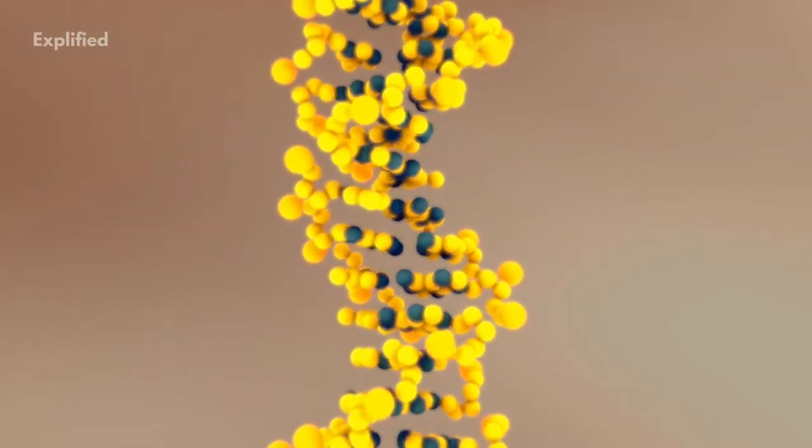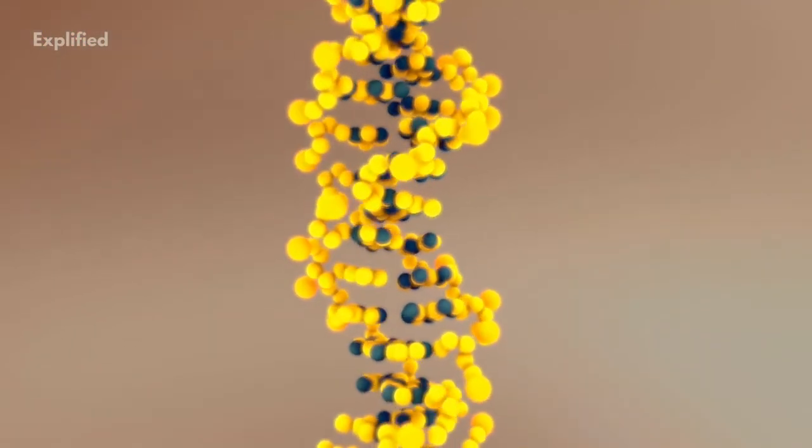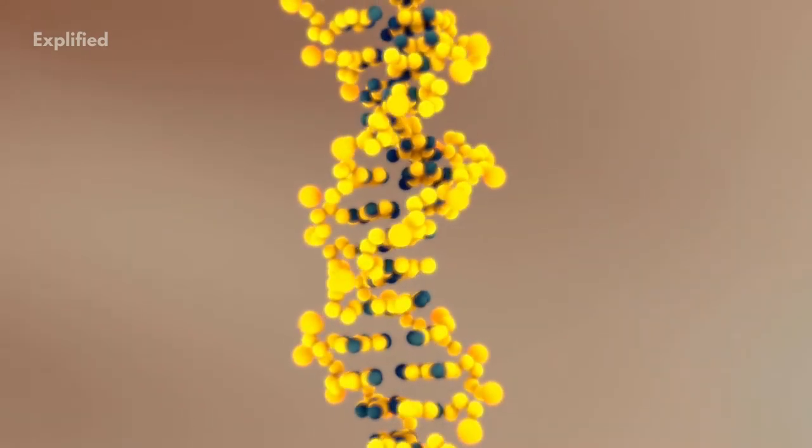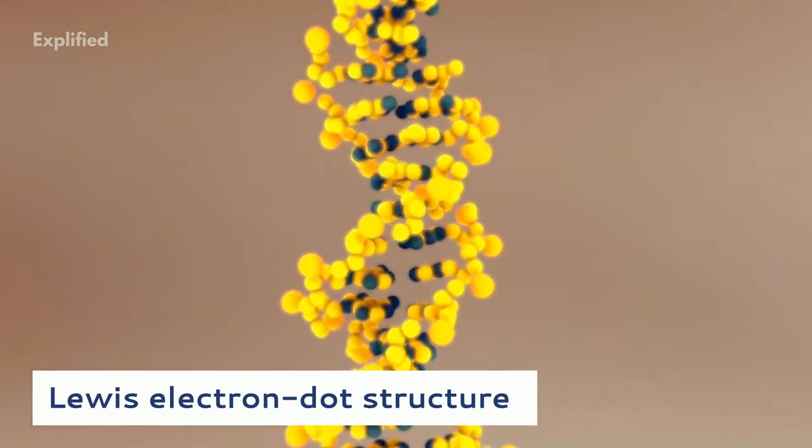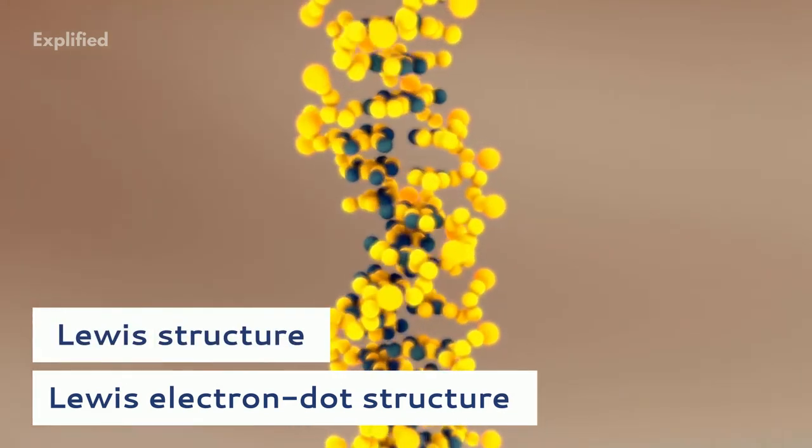In proposing the process of chemical bonding, Lewis provided a very convenient way of representing bonding in simple molecules. This is called the Lewis electron dot structure or simply Lewis structure.